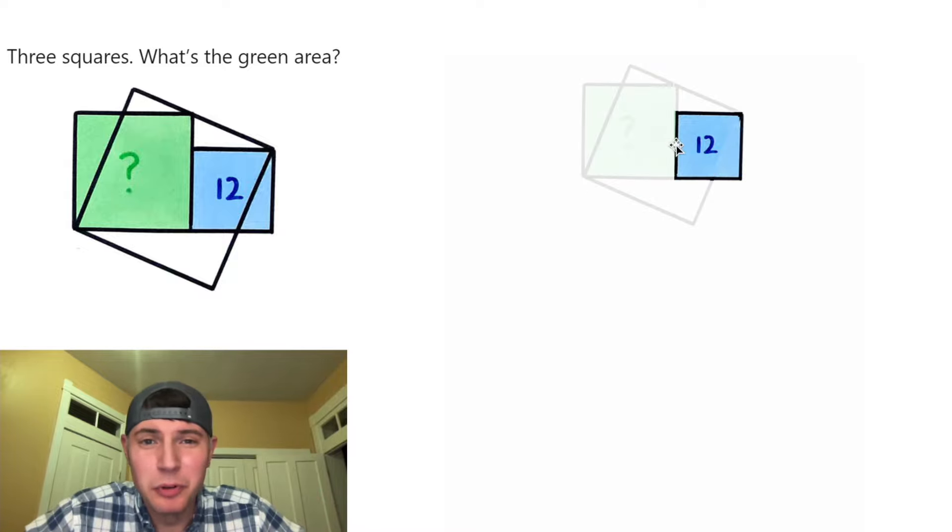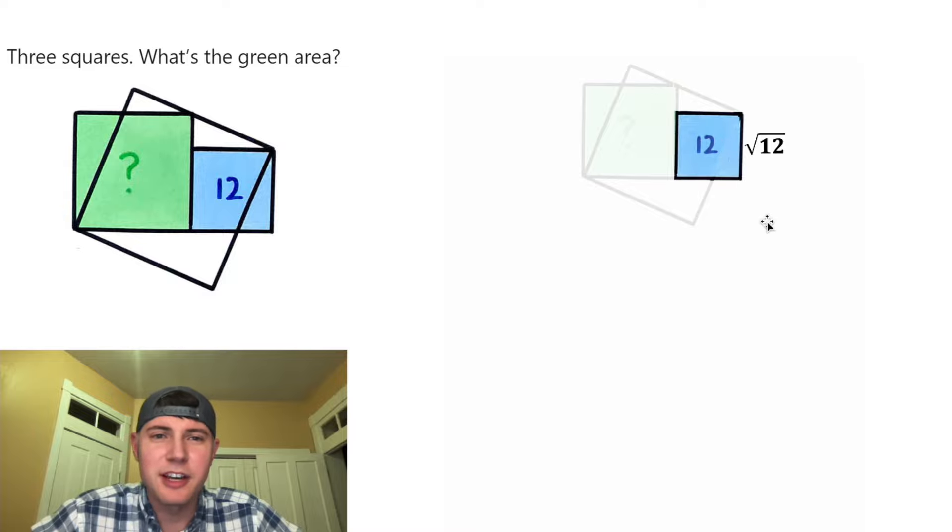First up, let's focus on this blue square. It has an area of 12, which means the side lengths are each going to be square root of 12. And this is going to be in the way, so let's hide this label.